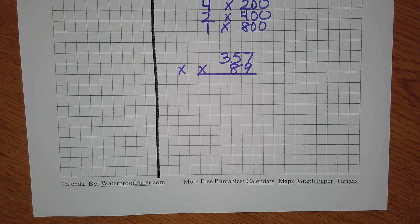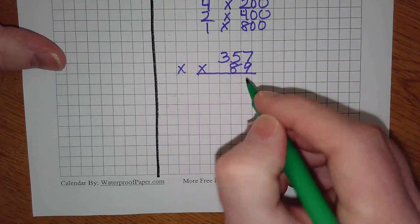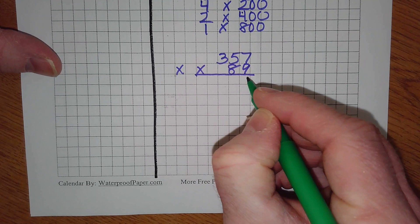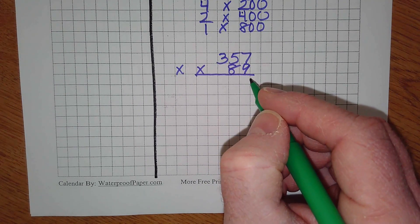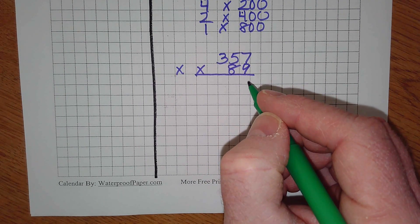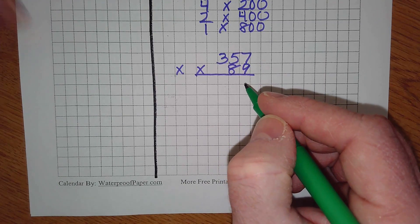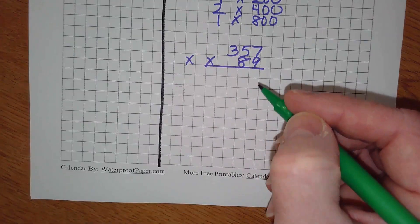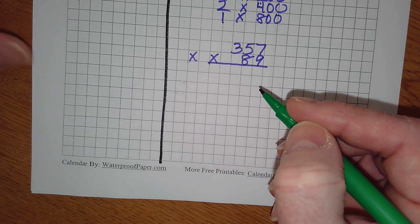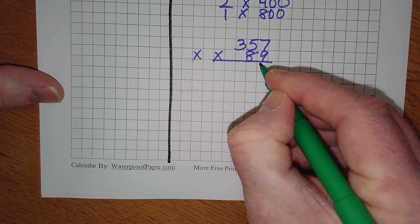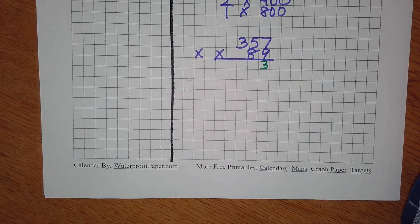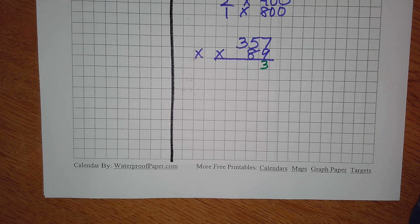Close. 9 times 7. Always start with the bottom numbers, folks. What's 9 times 7, Moose? Anyone help them out. What's 9 times 7? Yes, 63. Good, 3 goes below. What do we do with our 6, Moose? We don't carry water in a bucket.